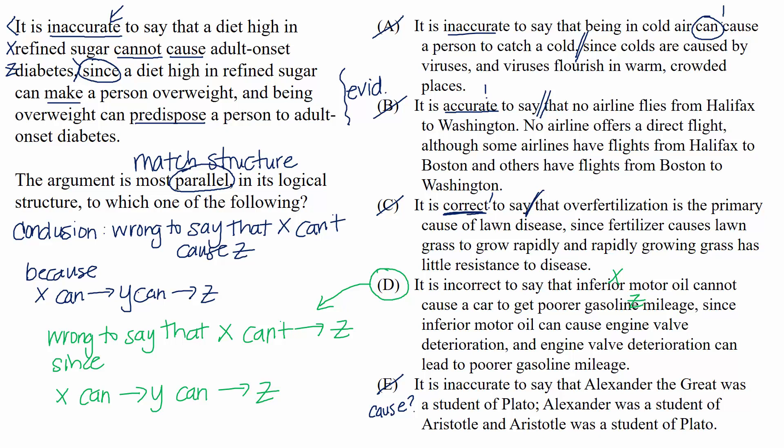And for the record, don't worry about the order of things. For example, let's say that the stimulus has a conclusion at the end. It's very possible that the answer has the conclusion at the beginning. You're not trying to match style of writing. You're trying to match logical structure. Remember, the same kind of conclusion and the same kind of evidence means that it's your answer.